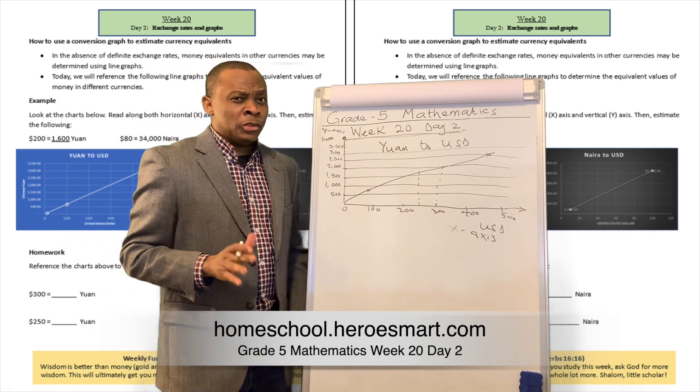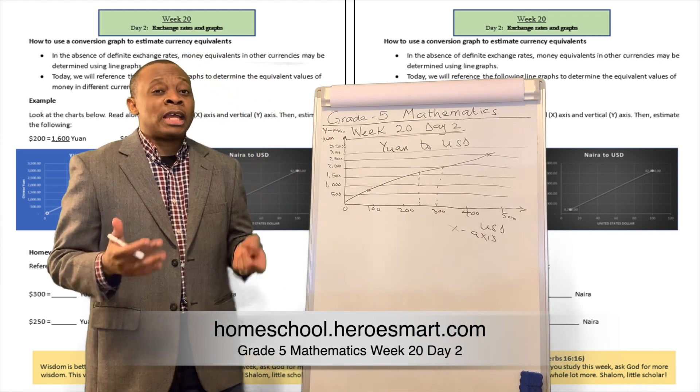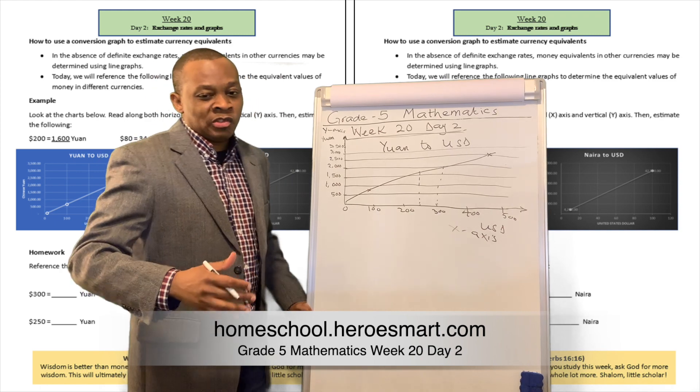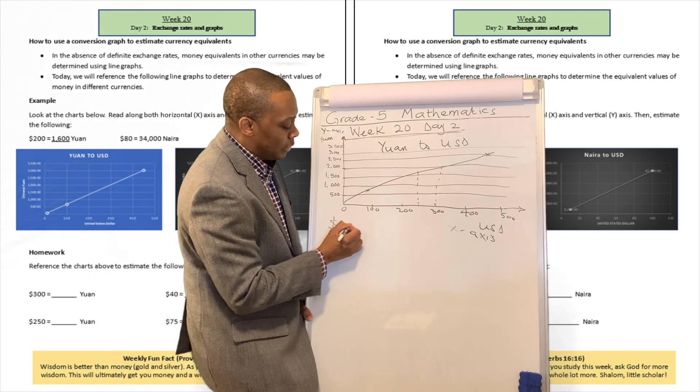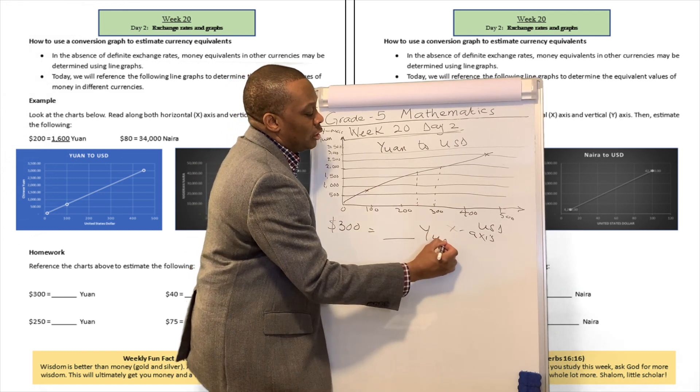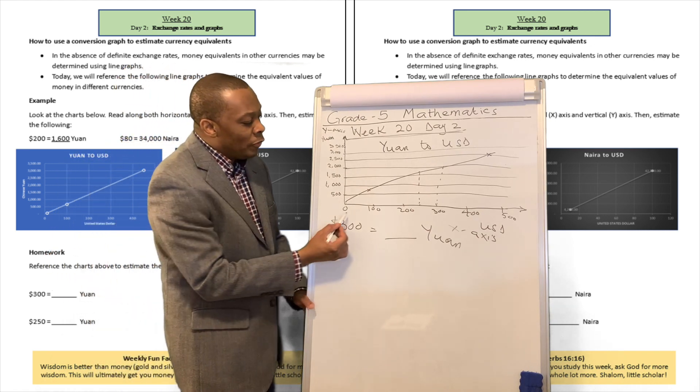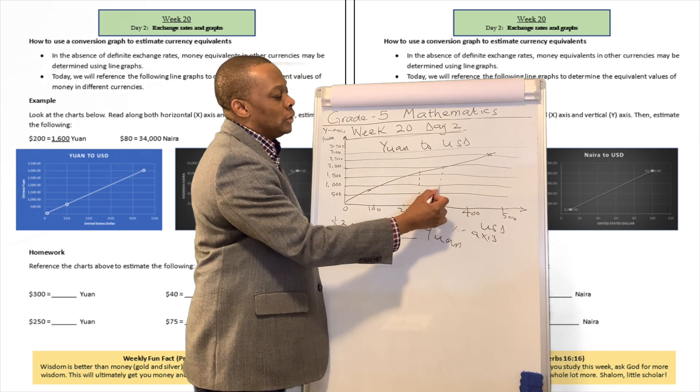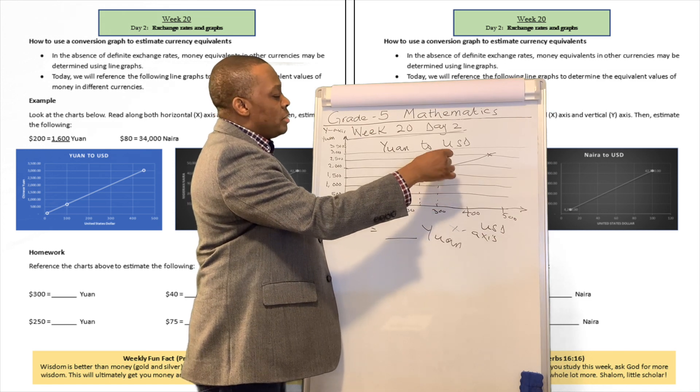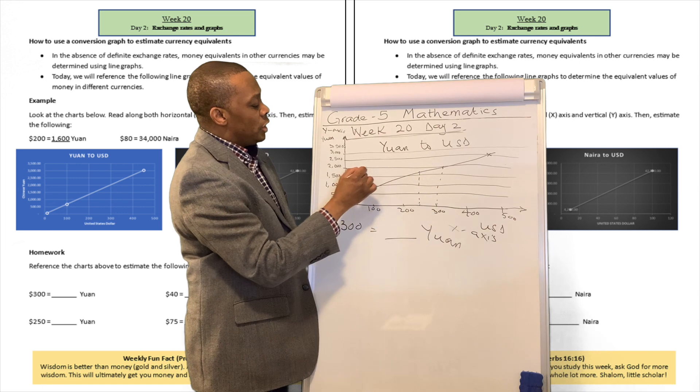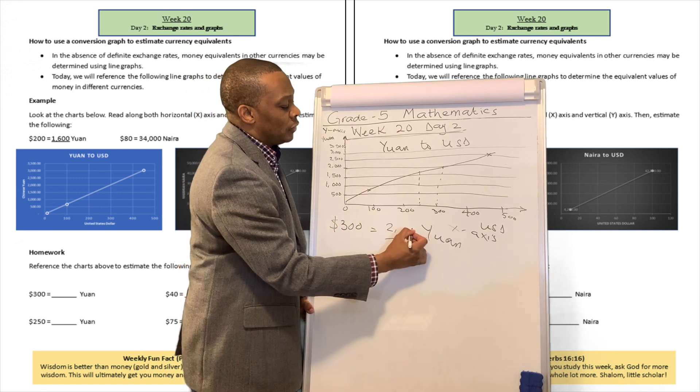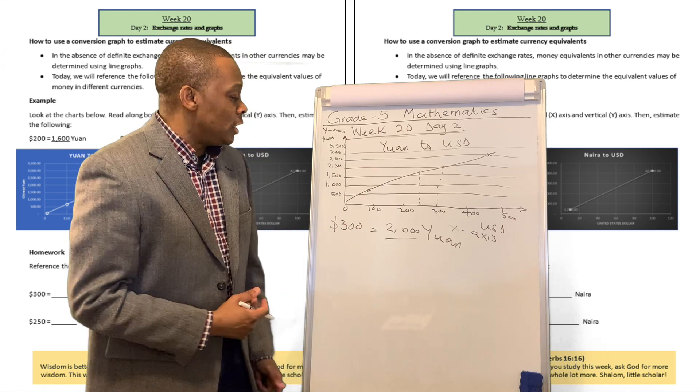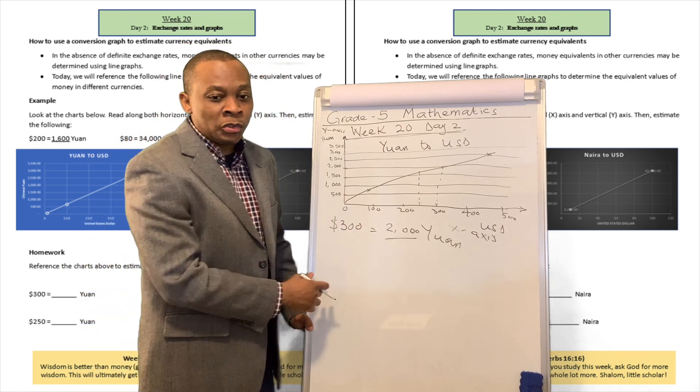Some people are going to go ahead and do the dirty job for you. They're going to say use this graph to estimate how much an amount of money is going to be worth. For example, what is $300 in terms of the Chinese currency yuan? Well, you're going to go over to $300 on the horizontal axis. This is where $300 is located. Then you're going to trace to this line chart. The line chart meets up here somewhere, and you're going to trace that over here to the left side. So it's going to be approximately equivalent to 2,000 yuanes. That's how you do it. And if you run your numbers based on the table we shared yesterday, you're going to see that the answer is really close to 2,000 yuanes.